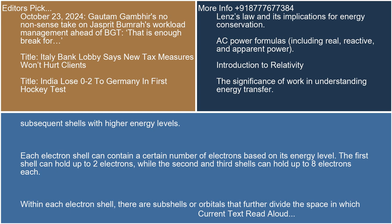Each electron shell can contain a certain number of electrons based on its energy level. The first shell can hold up to two electrons, while the second and third shells can hold up to eight electrons each.